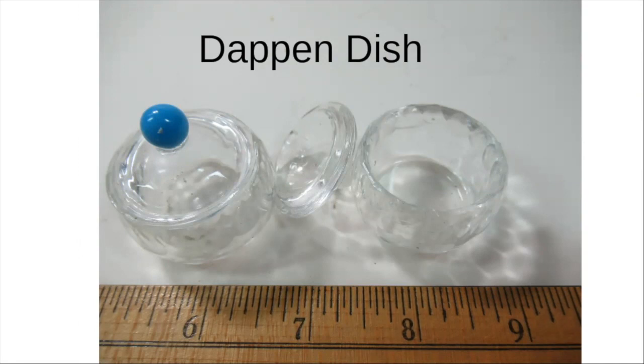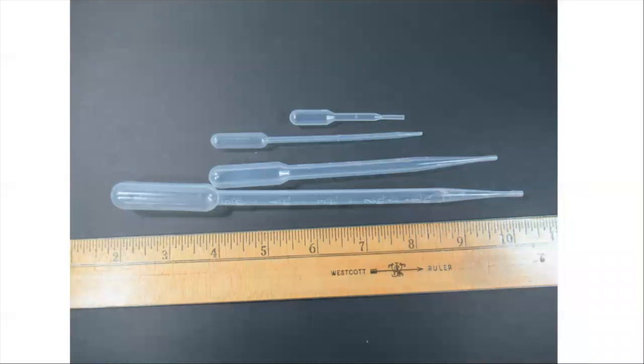Another thing on glue is this thing called a Dappen Dish. This comes from the fingernail department of the cosmetic section. They're glass, about an inch and a quarter in diameter. What I use these for is I'll put a little puddle of plastic solvent cement. The lids are not airtight, but you can put the lid on so you don't accidentally drop parts in. And then you take the lid off and you dip the brush. You can see how deep into the liquid you're dipping. It will slow down evaporation a little bit. You can find those for $2 or $3 on Amazon and eBay.